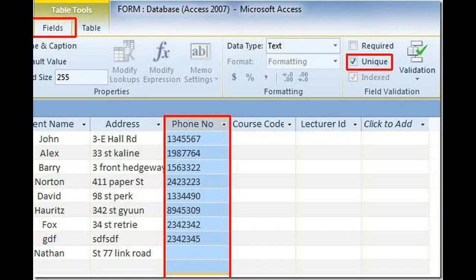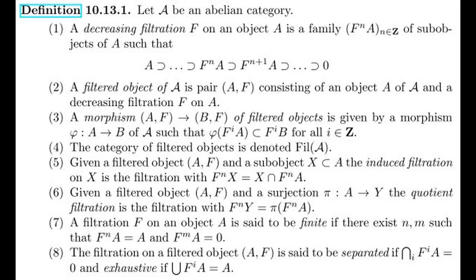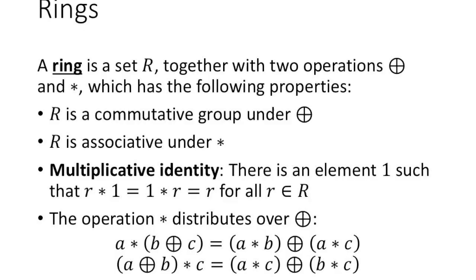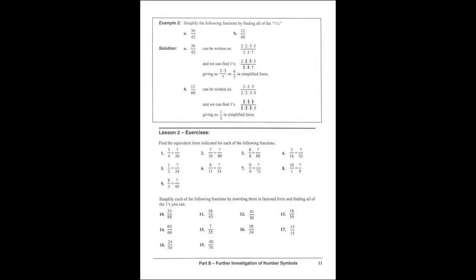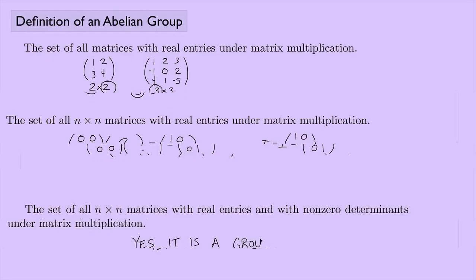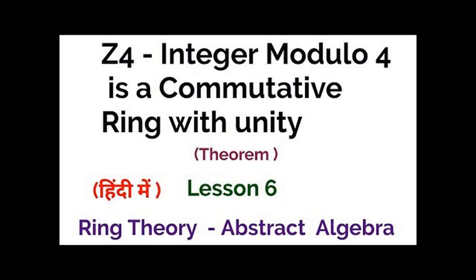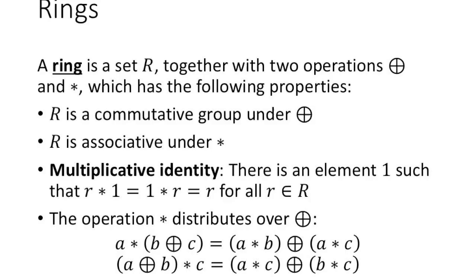A homomorphism from a ring to a ring is a function f from R to S that preserves the ring operations, namely, such that for all a, b in R the following identities hold: f(a + b) = f(a) + f(b), f(ab) = f(a)·f(b), and f(1ᵣ) = 1ₛ.